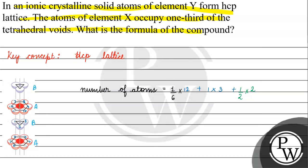How many are there? 1 by 2 is present. So, the total is 2 plus 3 plus 1 is 6. The number of atoms is 6.